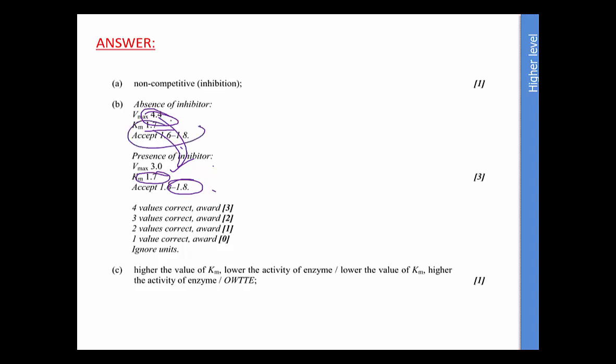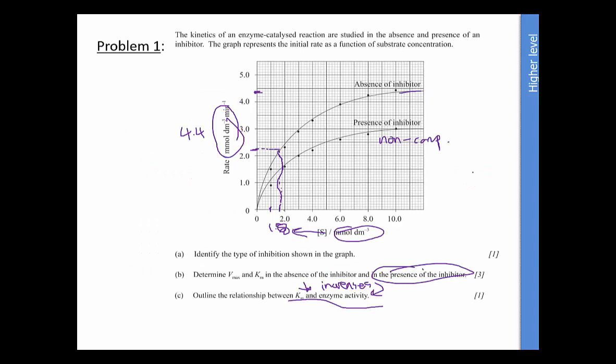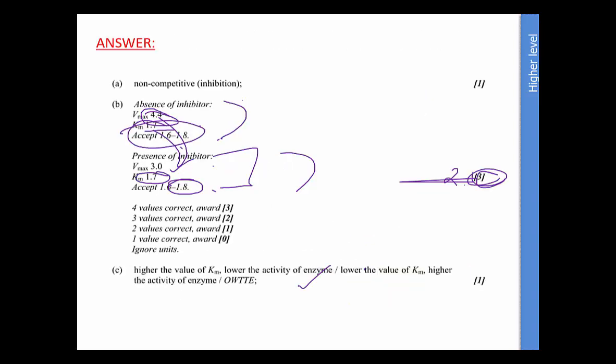And the higher the Km, lower the anti-activity, lower the Km, higher always to that effect. Either of those, that's an easy point. They don't usually ask, they usually only ask this or this, and it's worth two marks. They don't usually ask for three. So that's probably an older question.